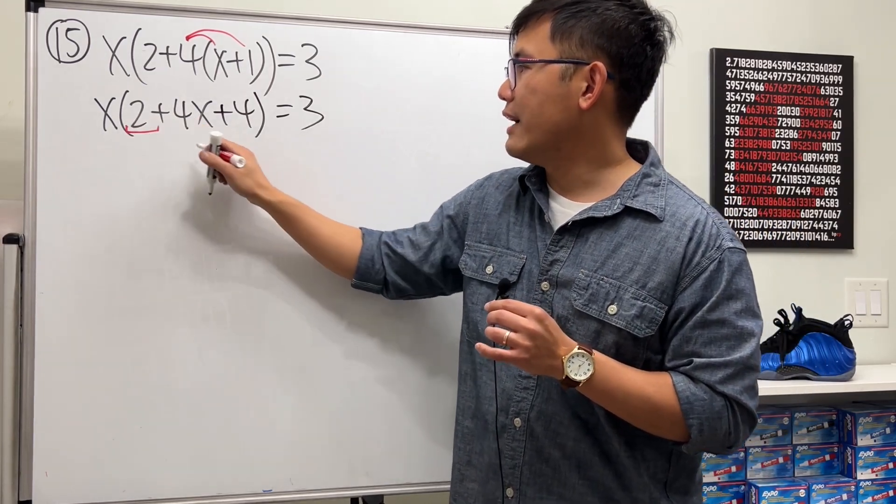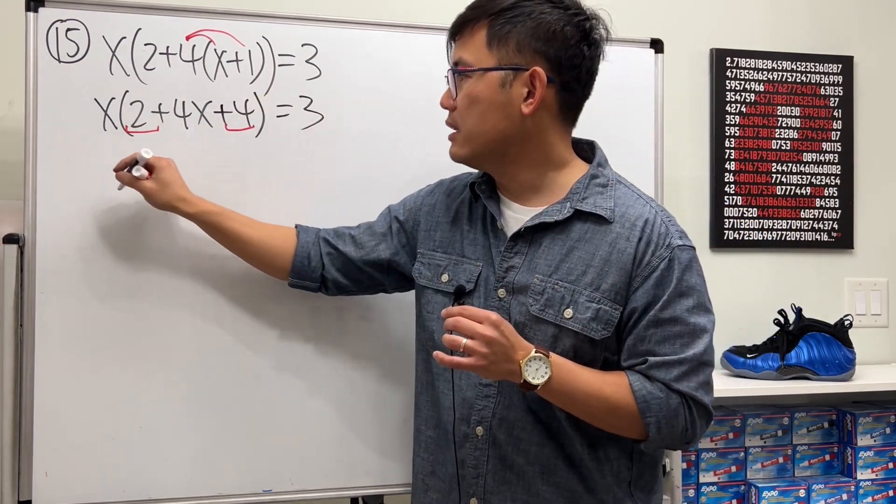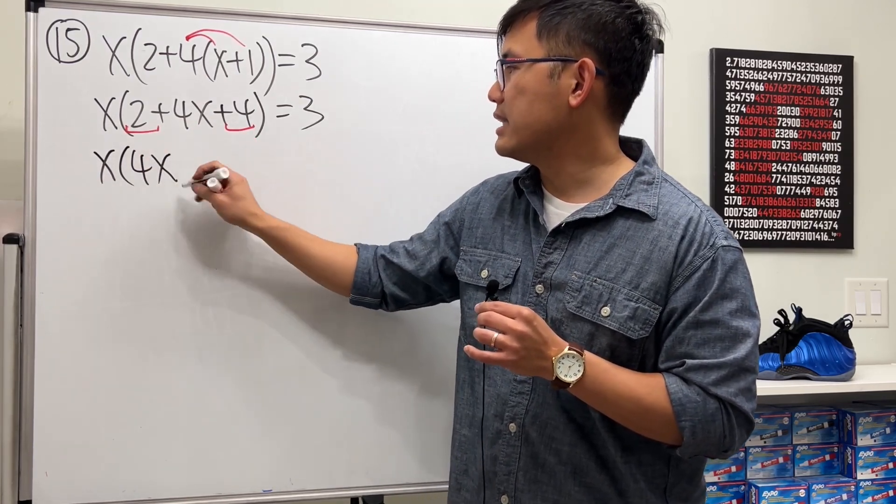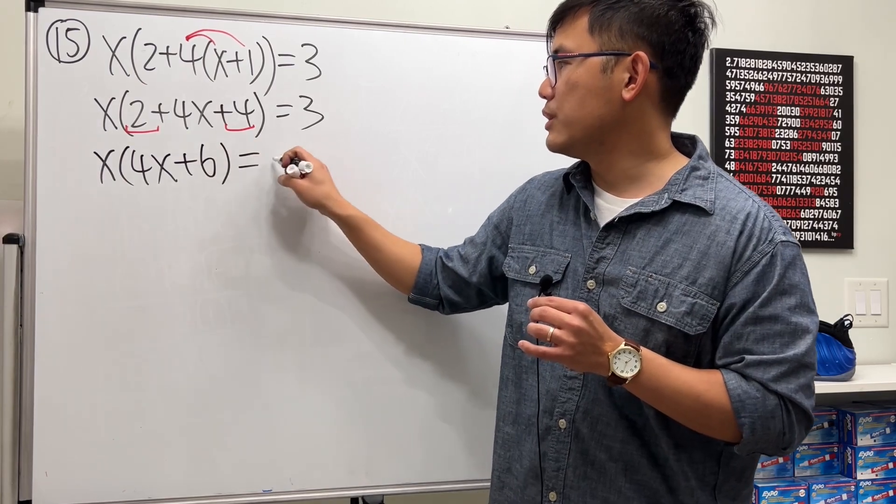Notice the inside we have 2 plus 4, we can combine. So that's x - let me write down the 4x first - and then this, and that is plus 6, and that's equal to 3.